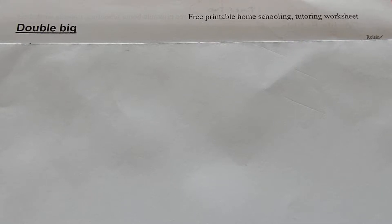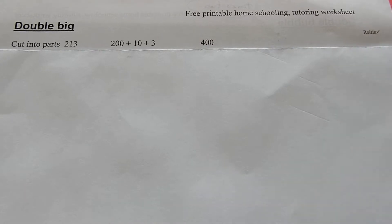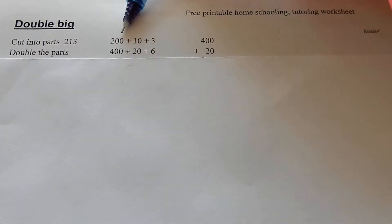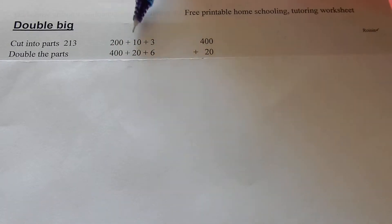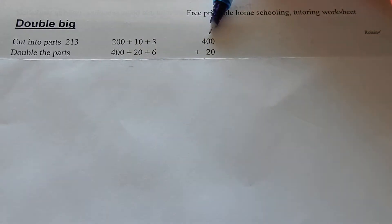Big doubles, double big. Okay, gonna double 213. First of all, cut it into parts. 213 is 210 and 3. Double the parts: double 200 is 400, double 10 is 20, double 3 is 6. Add those together: 400 plus 20 plus 6.